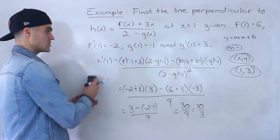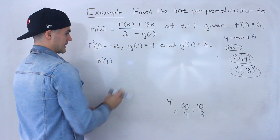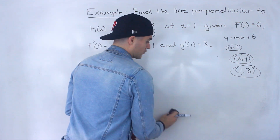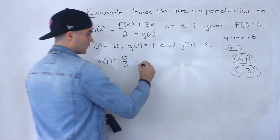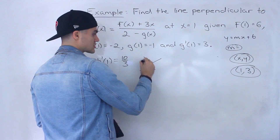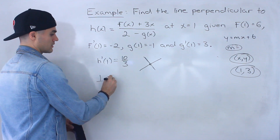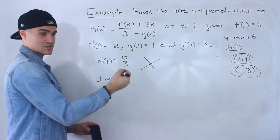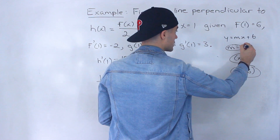So h prime of 1 equals 10 over 3. But remember, that's the slope of the tangent at x equals 1. We don't want the tangent slope — we need the slope of the normal, the perpendicular line. To find the perpendicular slope, we take the negative reciprocal, which gives us negative 3 over 10.